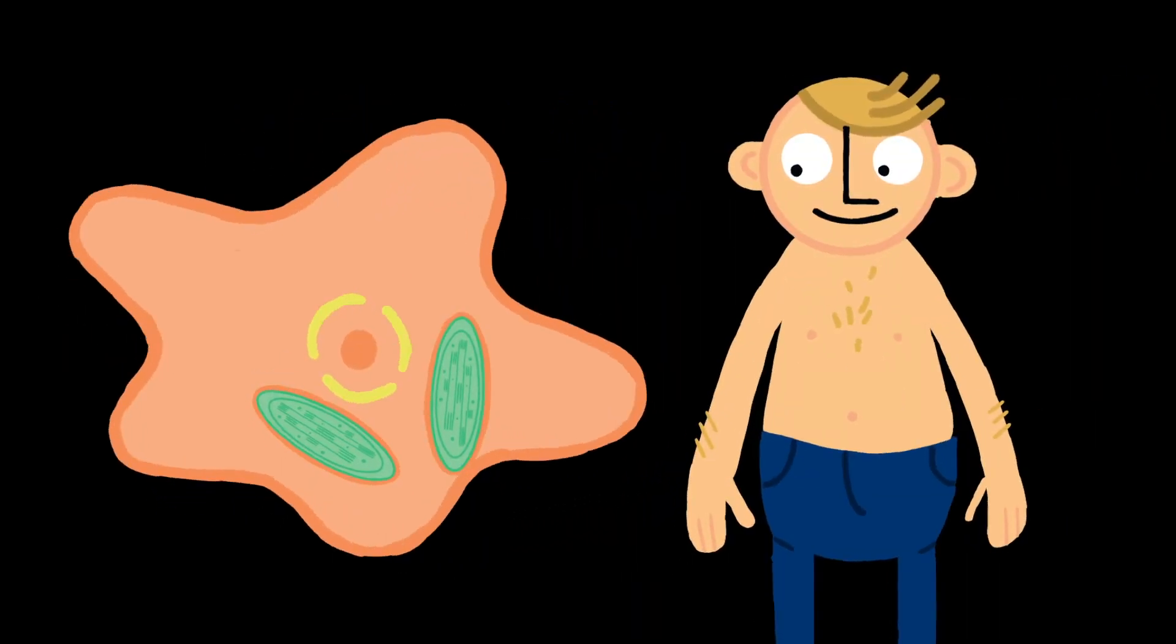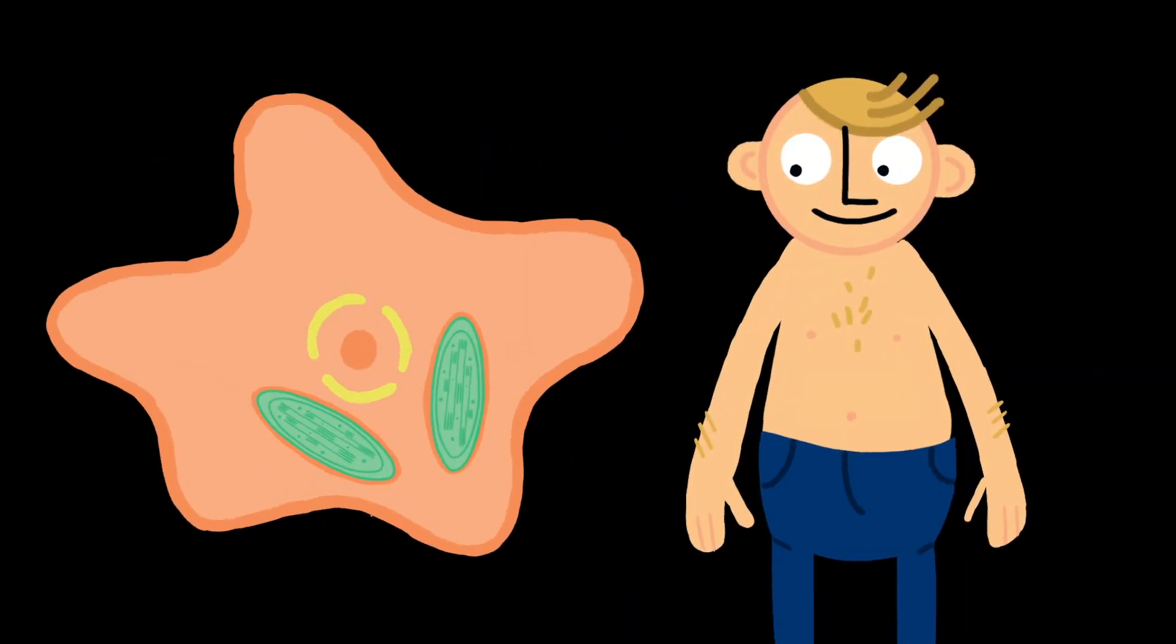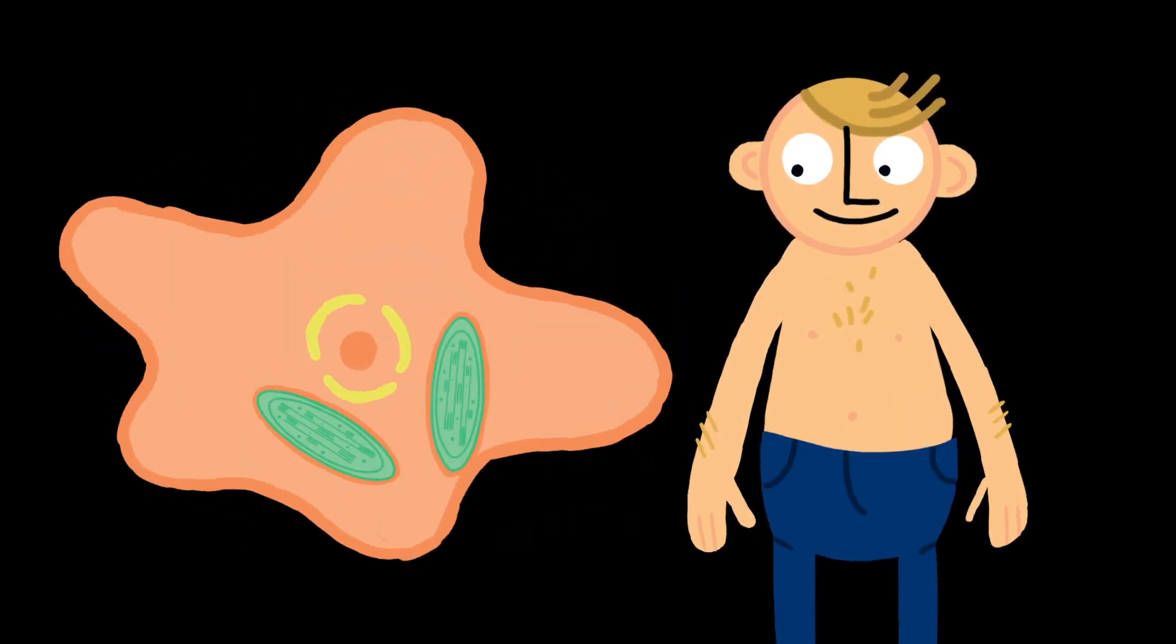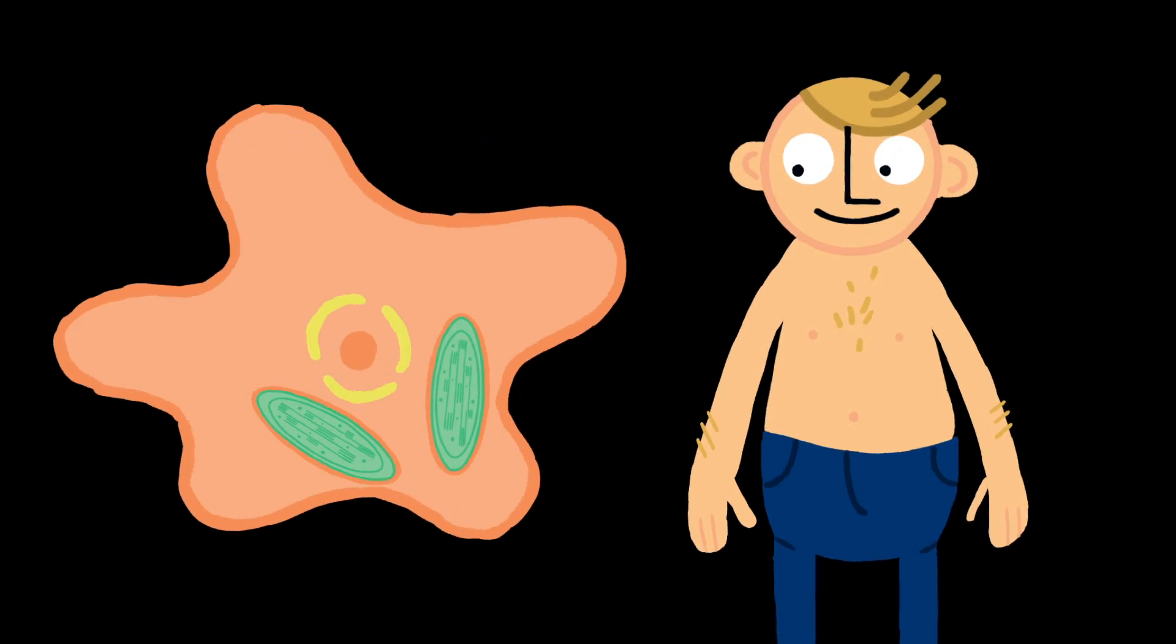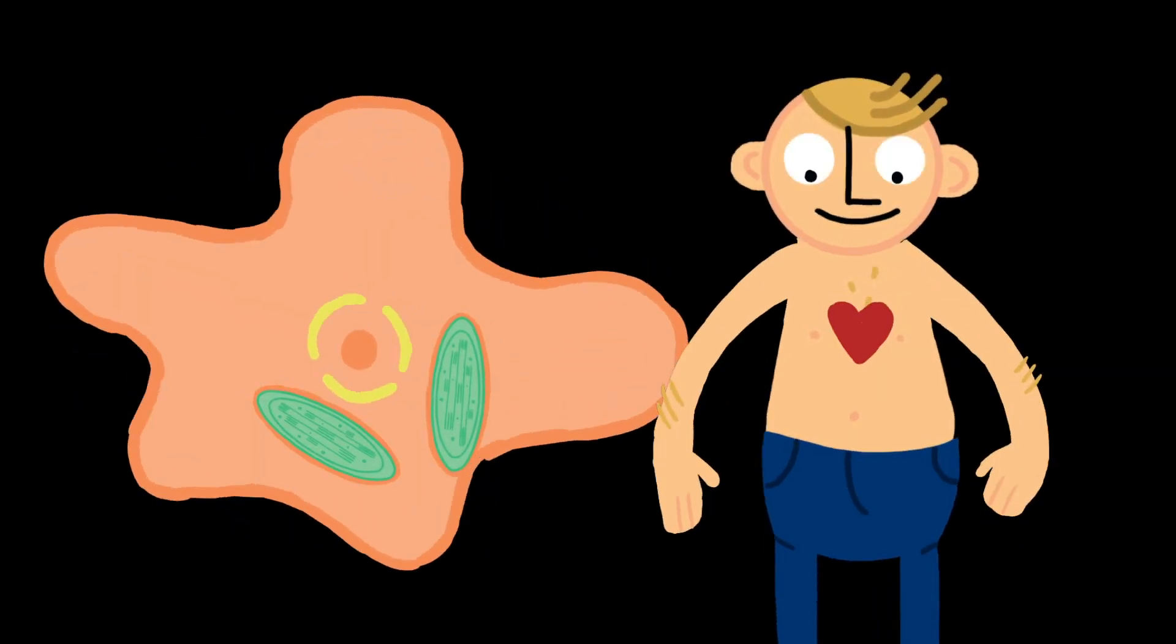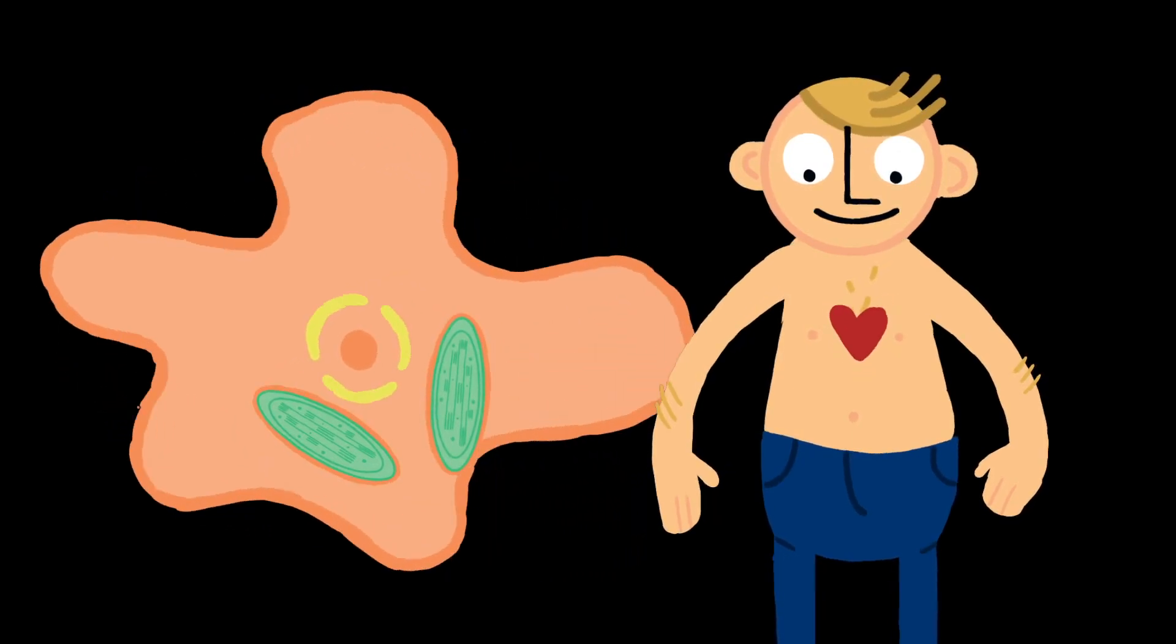If you stumbled upon this living arrangement, you might just think that the whole thing was one organism, that the green photosynthetic bacteria were just a part of the blob that performed one of its life functions, just like your heart is a part of you that performs the function of pumping your blood.